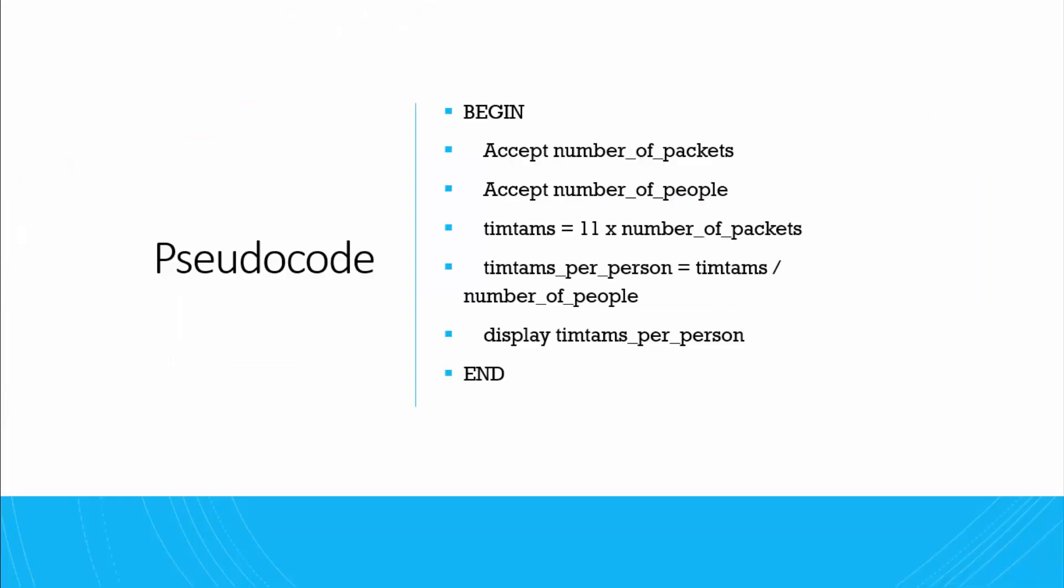So the pseudocode. To write pseudocode, we need to start with BEGIN and we need to finish with END. Then pseudocode, it's like plain English, it's just a little bit before the actual real code. So in plain English, what needs to happen? First thing that needs to happen is we need to accept the number of packets and people that we have. We then need to set up another variable which is called Tim Tams, and then we'll apply the mathematical equation of 11 times the number of packets.